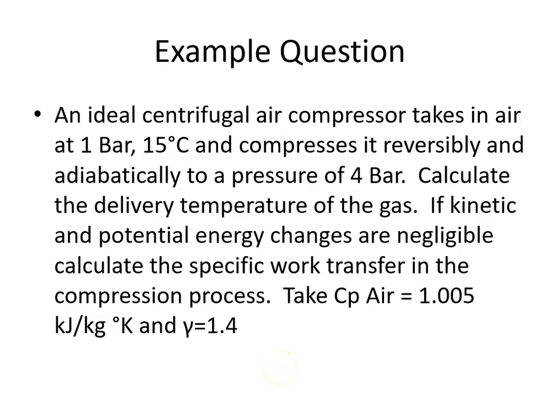In this example we're asked, if an ideal centrifugal air compressor takes in air at 1 bar, 15 degrees Celsius, and compresses reversibly and adiabatically to a pressure of 4 bar, calculate the delivery temperature of gas. If kinetic and potential energy changes are negligible, calculate the specific work transfer in the compression process. And we're told to take the specific heat capacity of air at constant pressure Cp to be 1.005 kJ per kilogram Kelvin, and the ratio of specific heats gamma to be 1.4.